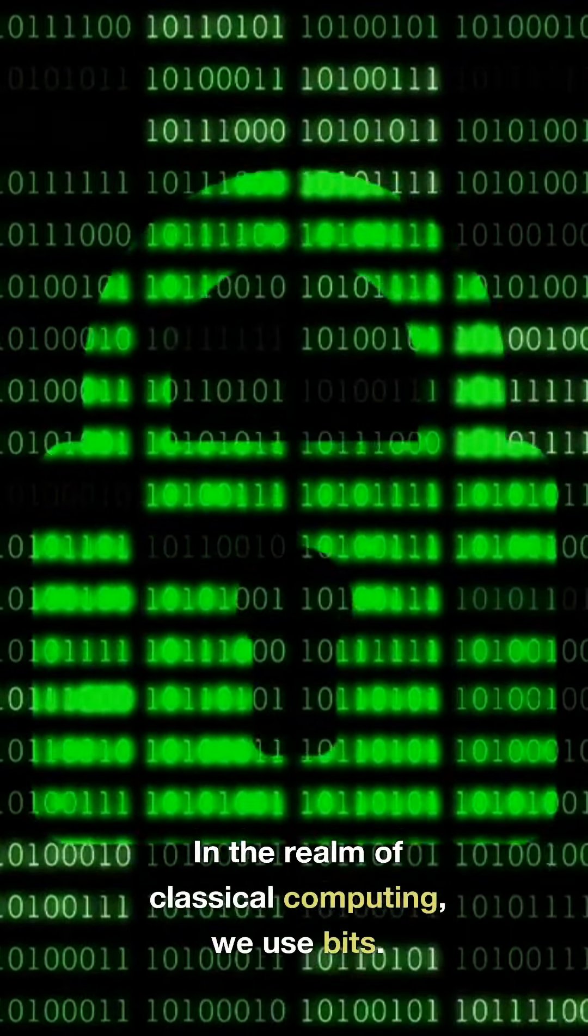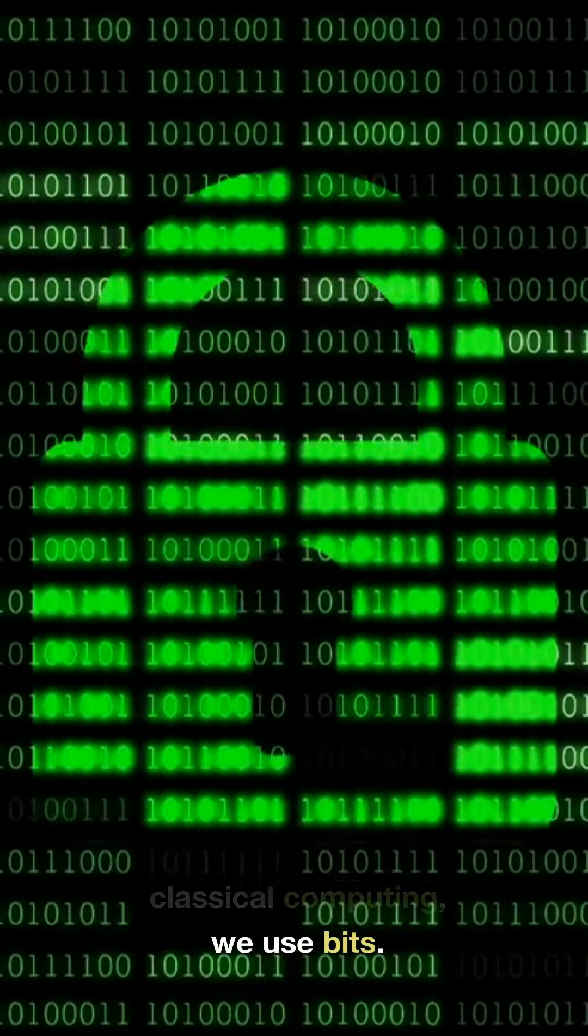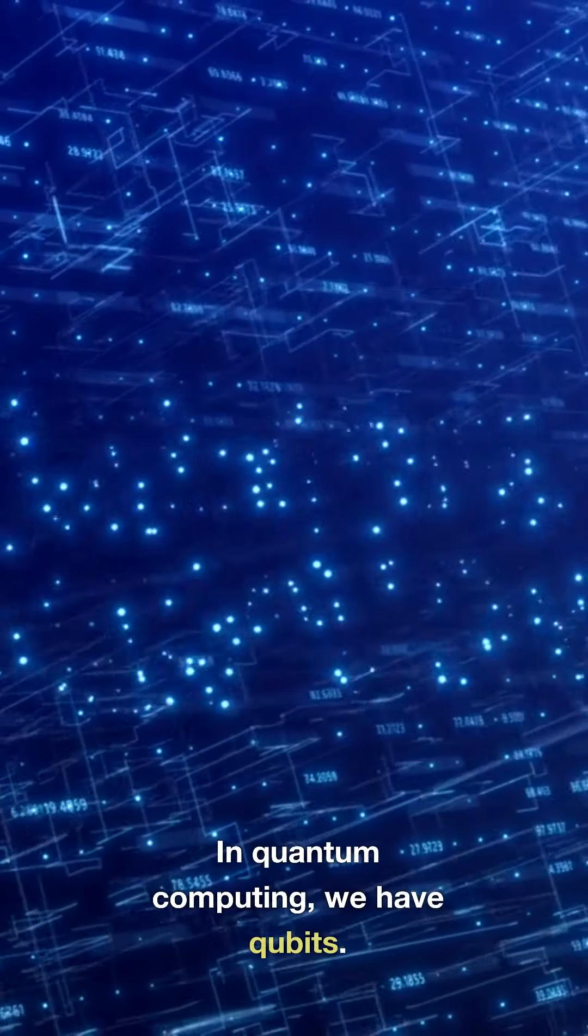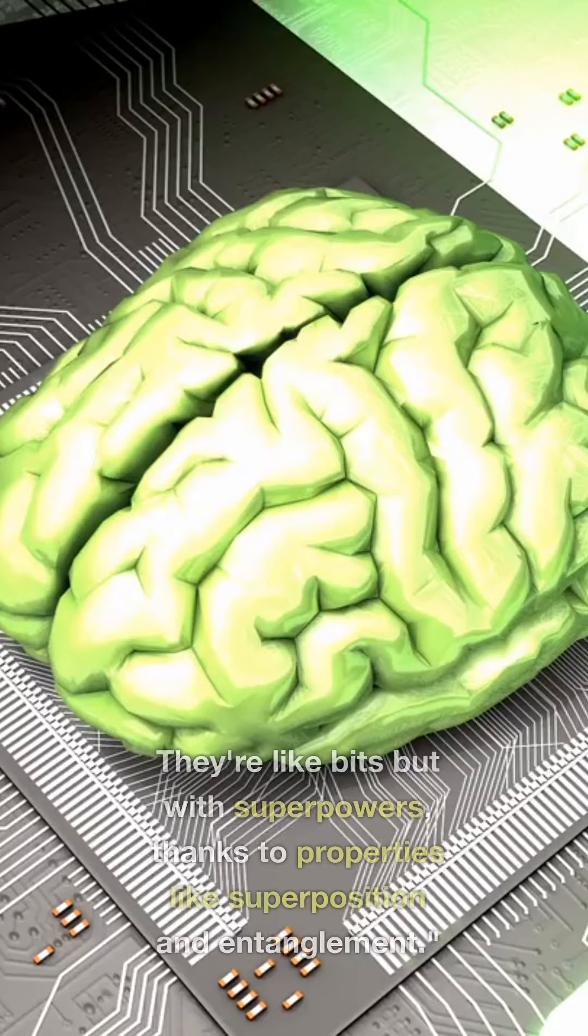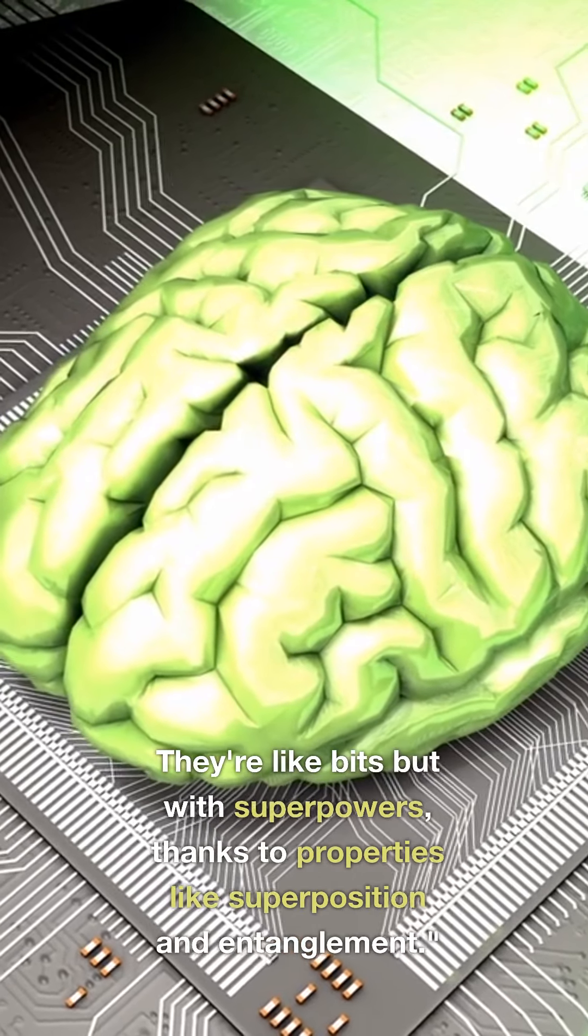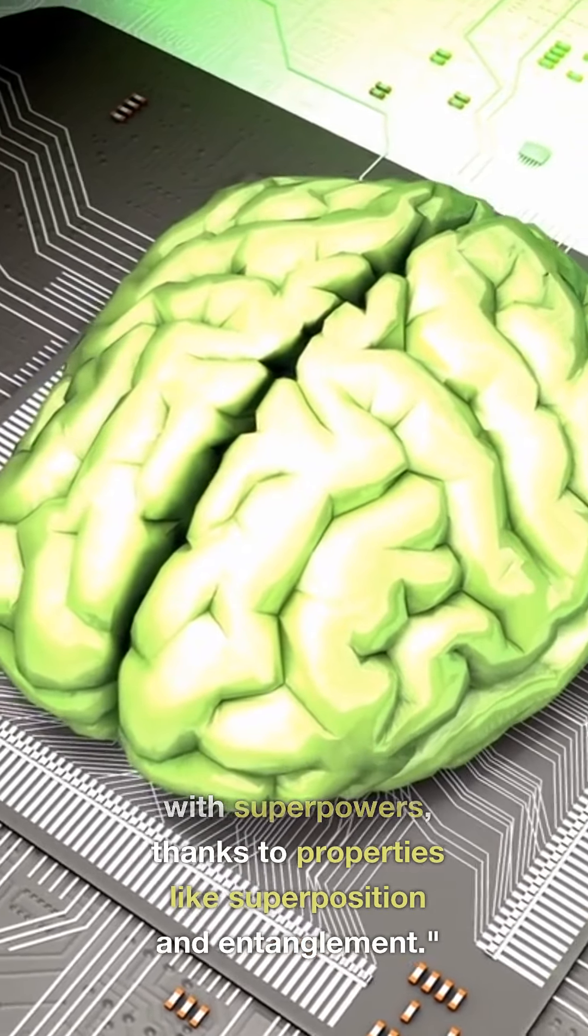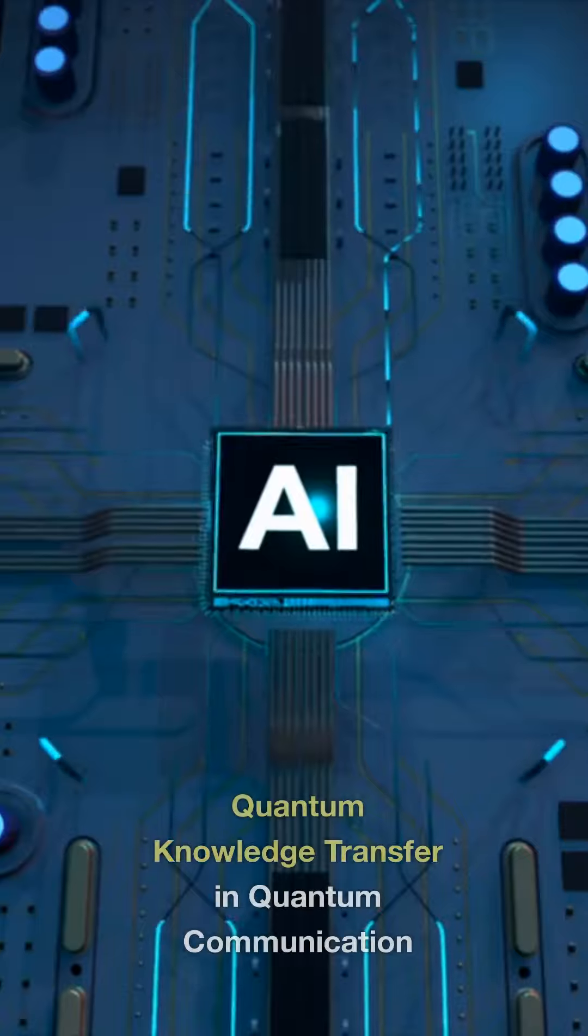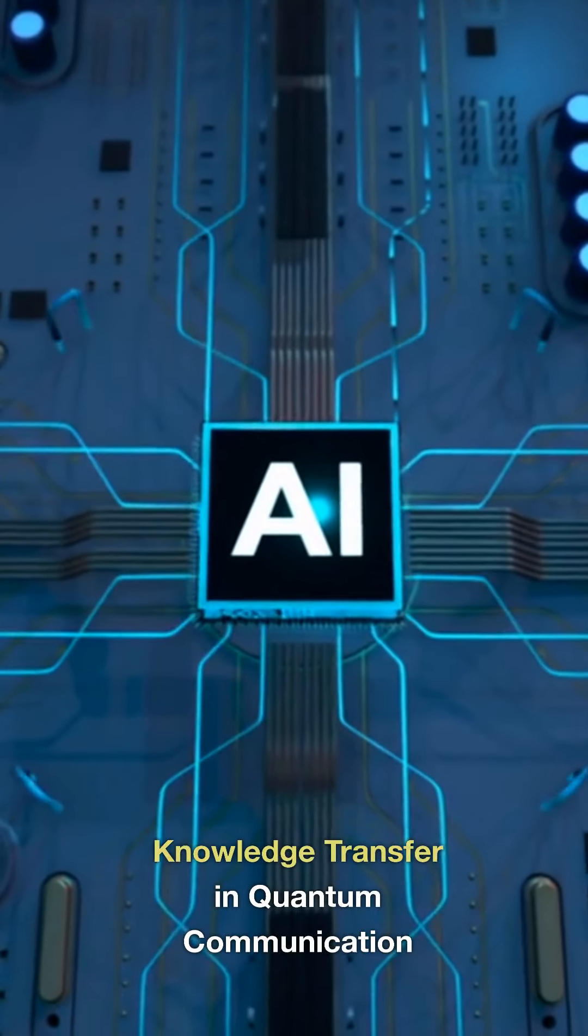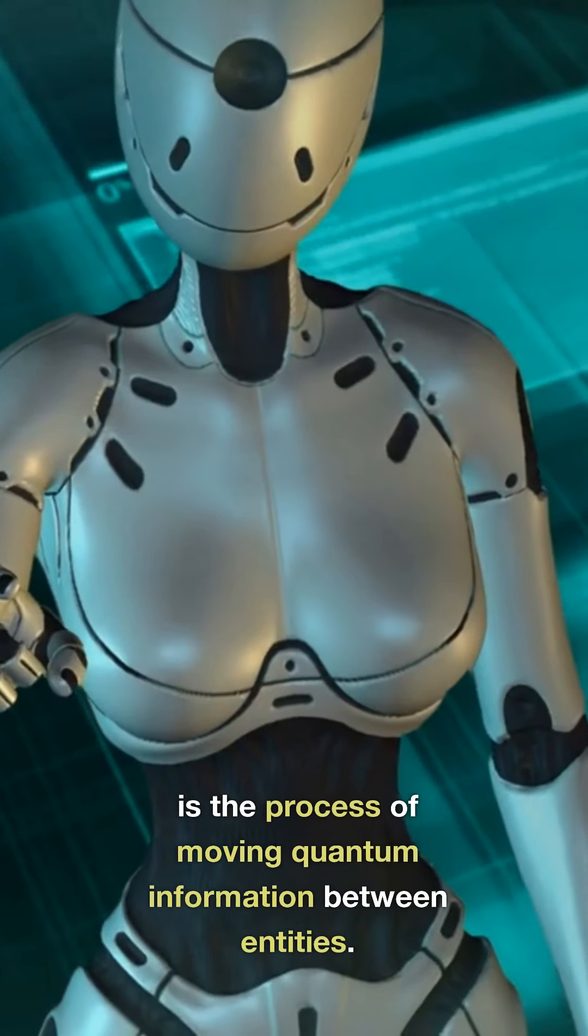In the realm of classical computing, we use bits. In quantum computing, we have qubits. They're like bits but with superpowers, thanks to properties like superposition and entanglement.